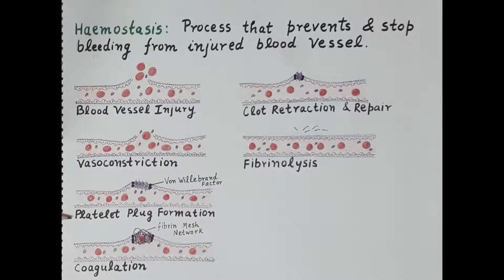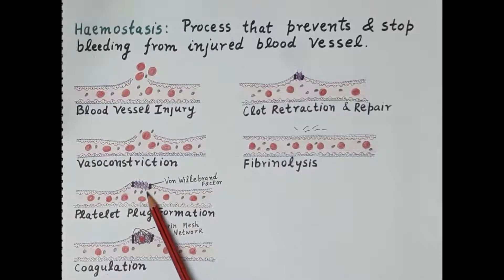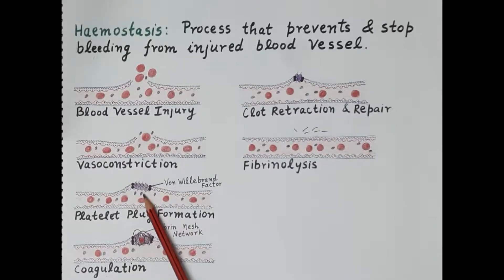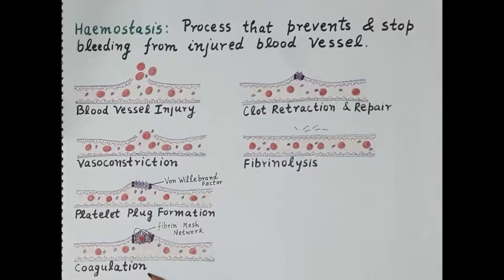Vasoconstriction is followed by the formation of a platelet plug, which is also called primary hemostasis. As shown in the diagram, platelets stick to each other forming a platelet plug, which temporarily seals the injured site of the blood vessel wall. Platelet plug formation is then followed by coagulation, or the clotting of blood, which is also termed secondary hemostasis.